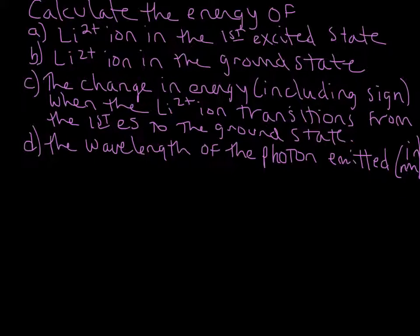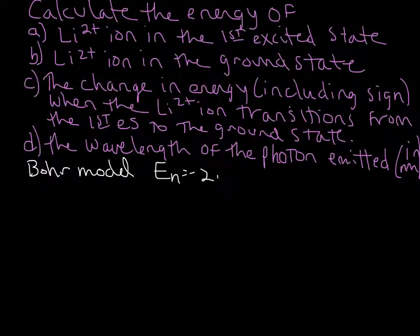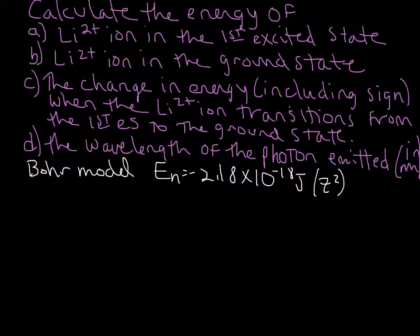Let's write down a few equations. We're going to be using the Bohr model, and we can calculate the energy of a certain energy state using this equation: negative 2.18 times 10 to the negative 18 joules, multiplied by Z squared — remember, that's the atomic number — and then multiplied by 1 over n squared. This n is whichever principal quantum number, whatever state it is in.